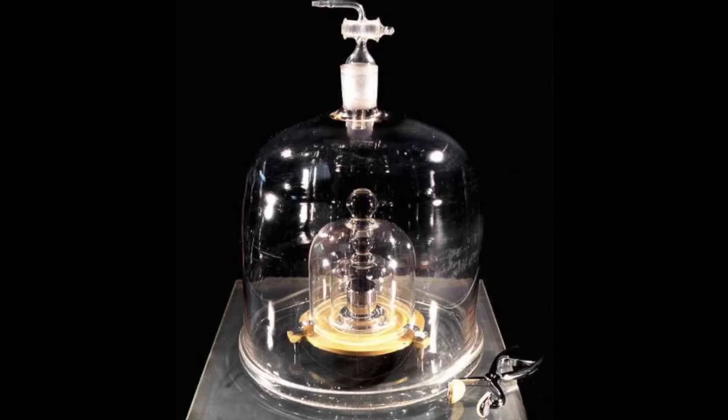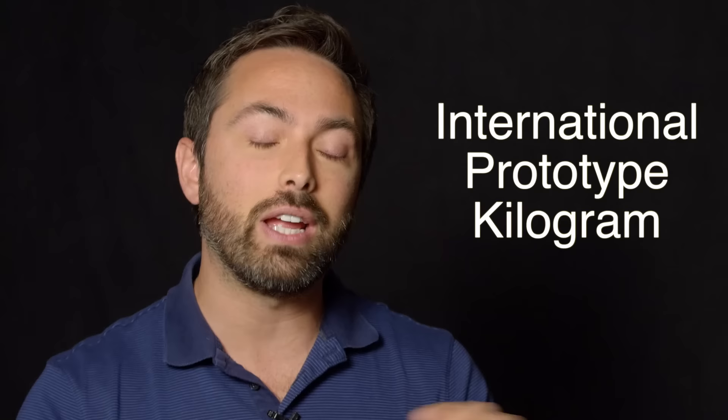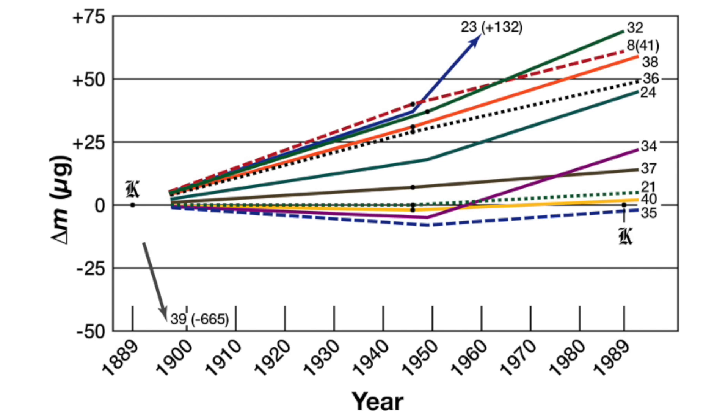The kilogram is in trouble. Since 1799, it's been defined as the mass of a metal cylinder in a locked vault in a basement in Paris. But over the last century, careful measurements of this international prototype kilogram and, in theory, identical national standards from around the world have shown that their masses are diverging. The spread has grown to around 50 micrograms, or 50 parts per billion, and having a standard of mass that changes is unacceptable.